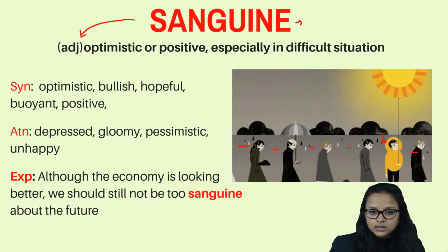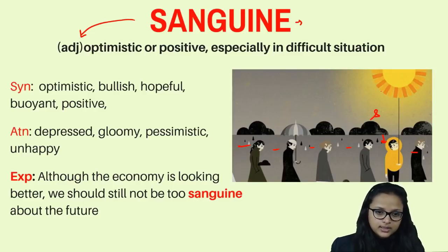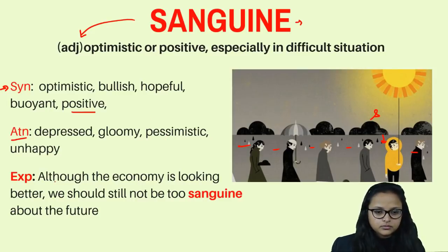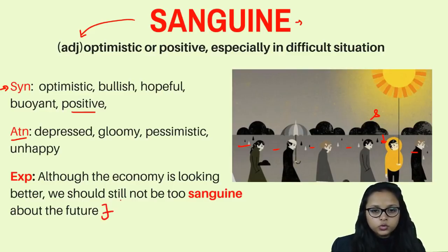Everybody else is pessimistic with no hope of seeing sun, but this sanguine person believes it will shine once again. Synonyms are: optimistic, bullish, hopeful, buoyant, and positive. Antonyms are: depressed, gloomy, pessimistic, and unhappy. Example: 'Although the economy is looking better, we should still not be too sanguine about the future' — meaning we shouldn't be too optimistic.